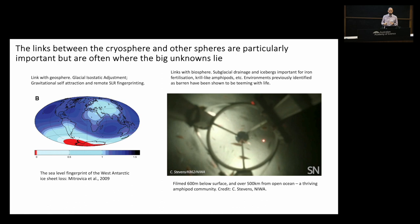Antarctica used to be thought of as a barren desert, but if you know where to look the environment is teeming with life. This video was taken down a 40-centimetre borehole drilled 600 metres into an ocean cavity over 500 kilometres from any open ocean. When they turned on their cameras, they found a thriving community of amphipods — krill-like critters a few centimetres long. They think these organisms are there because this is an outlet of subglacial drainage, which carries enough iron to promote ecosystem development.